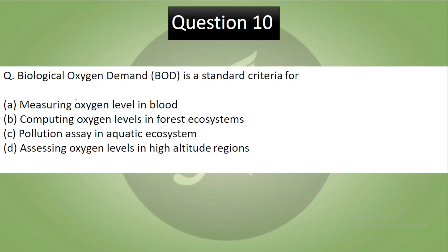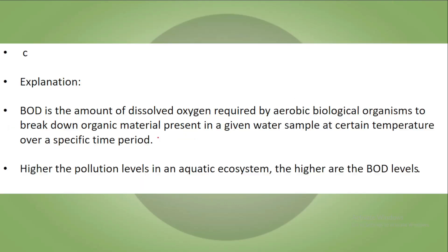Question 10: Biological Oxygen Demand is the standard criterion for — A: measuring oxygen level in the blood, B: computing oxygen level in a forest ecosystem, C: assessing pollution in an aquatic ecosystem, D: accessing oxygen levels in high altitude regions. Pause the video and try to answer. Your correct answer is C — assessing pollution in an aquatic ecosystem.